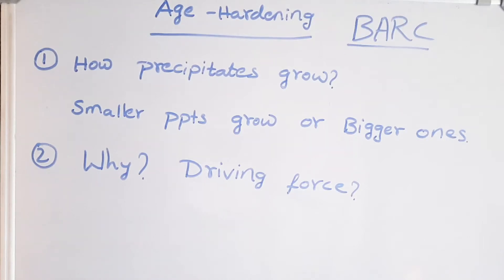During age hardening, how do precipitates grow — whether the smaller ones grow or the bigger ones grow, and why does this happen and from where does the driving force come from?